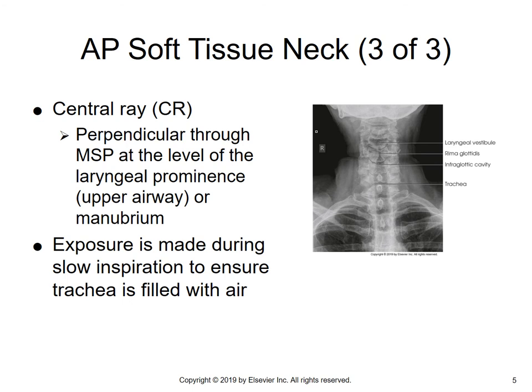The central ray is perpendicular through the MSP at the level of the laryngeal prominence or the area of the manubrium, which is the very top of the sternum, that little notched area. Exposure is made during slow inspiration to ensure that the trachea is filled with air, so the patient should be breathing in.